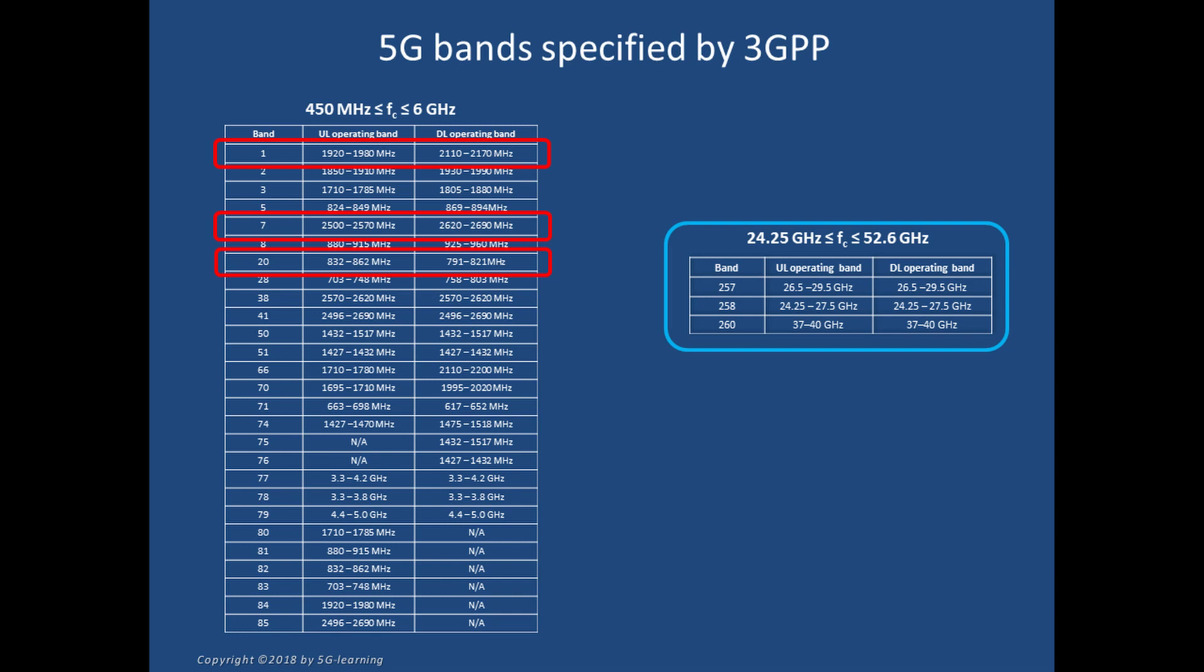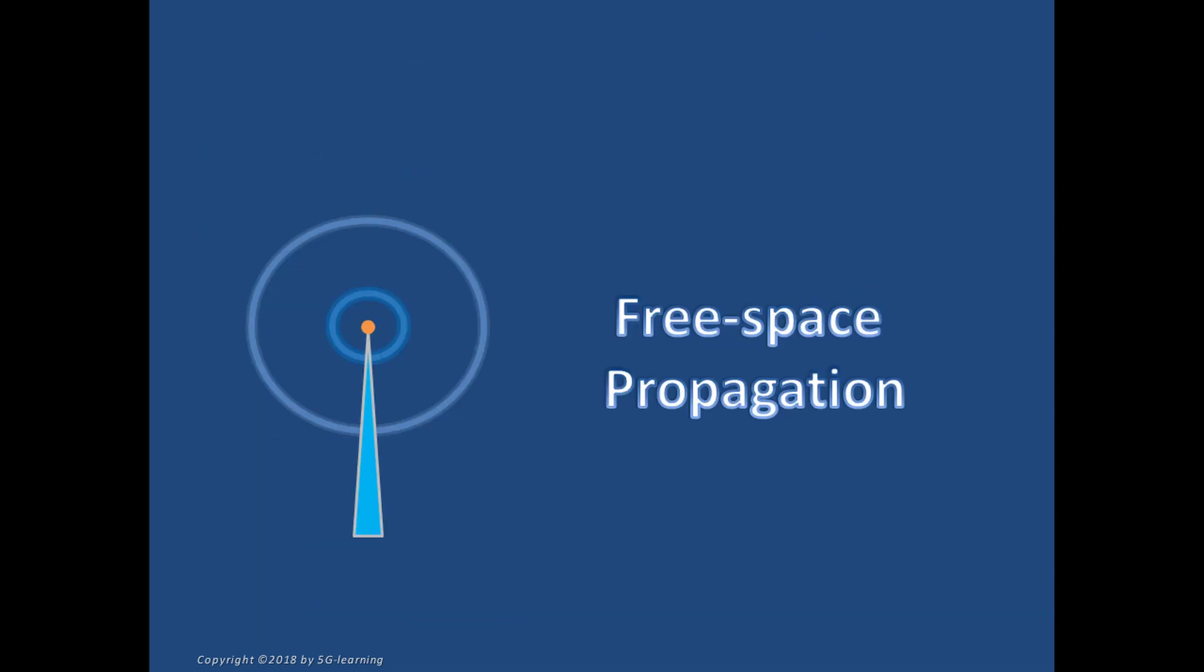On the other hand, millimeter bands have not been used for cellular communications up to now. Due to their high frequencies, they behave differently than the centimeter ones. We will talk on these specificities in a few minutes.